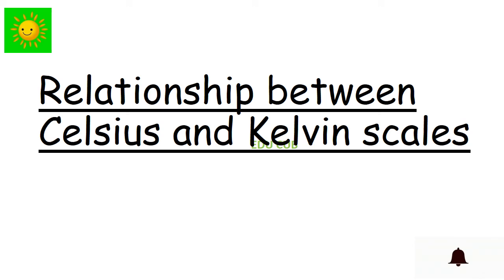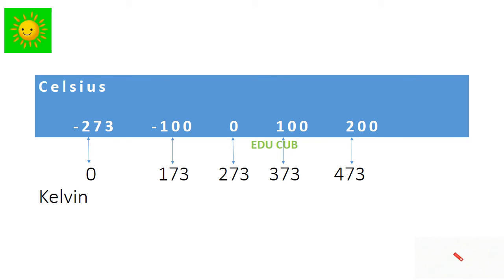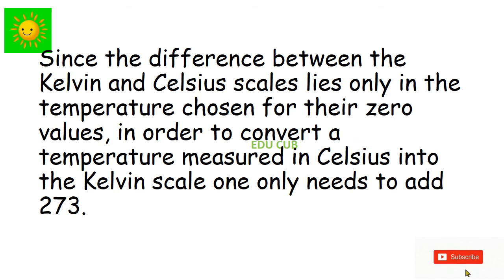Let's see the relationship between Celsius and Kelvin scales. Since the difference between the Kelvin and Celsius scale lies only in the temperature chosen for their zero values, in order to convert a temperature measured in Celsius into the Kelvin scale, one only needs to add 273.